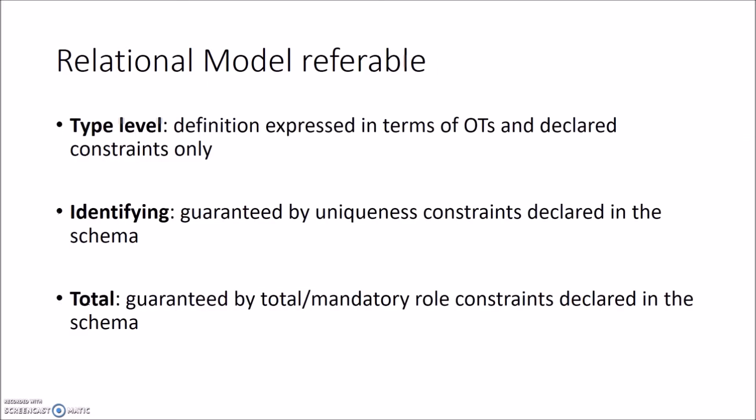So we need to find a way to make every object type relational model referable. This is defined on the type level of the object type, so every instance of that object type will be referable in the same way. This reference is identified by the uniqueness constraint in the schema, together with the assurance that every such reference will exist — in other words, every such reference is mandatory.